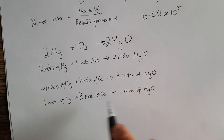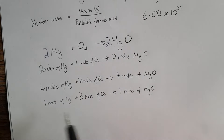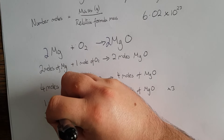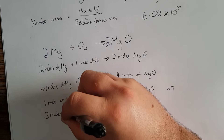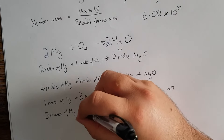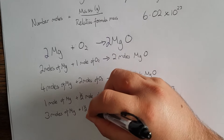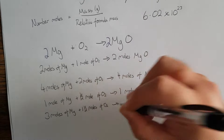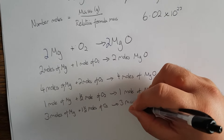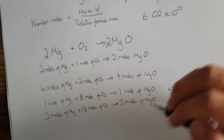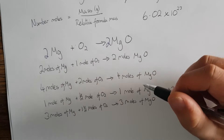To get three moles, I'm going to times everything by three. That gives me three moles of magnesium, plus three times a half is one and a half moles of oxygen, and that gives me three moles of magnesium oxide. All numbers that are fairly simple so far.